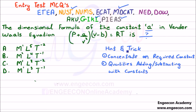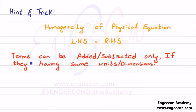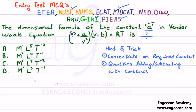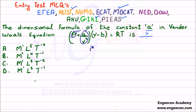We can solve this using the same hints and tricks. The trick is to concentrate on the required constant — in this case, constant A — and the quantities being added or subtracted with it. Since terms can only be added or subtracted if they have the same units and dimensions, pressure and the factor A/V² share the same units. So we write pressure equal to A divided by V².